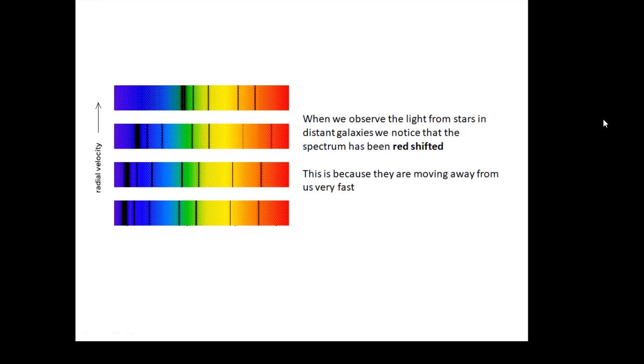One last thing to mention about these black lines - we'll talk more about this in another topic - is that if you look at the light from distant galaxies, this absorption spectrum, these black lines, are shifted over to the red. That's a kind of a Doppler effect thing, and it's because these distant galaxies are moving away from us very fast. I'm sure you'll remember from your physics: redshift.